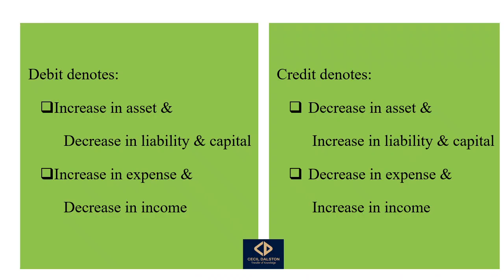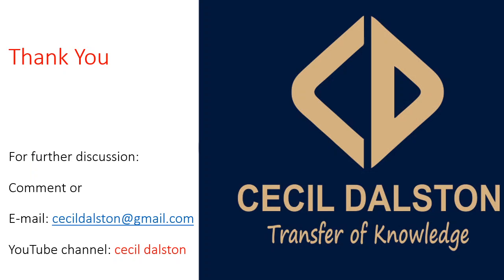To conclude: debit denotes increase in asset and decrease in liability and capital, as well as increase in expense and decrease in income. Credit denotes decrease in asset and increase in liability and capital, decrease in expense and increase in income. For further discussion, comment or email CecilDolston@gmail.com. Subscribe to my YouTube channel, Cecil Dolston. Thank you.